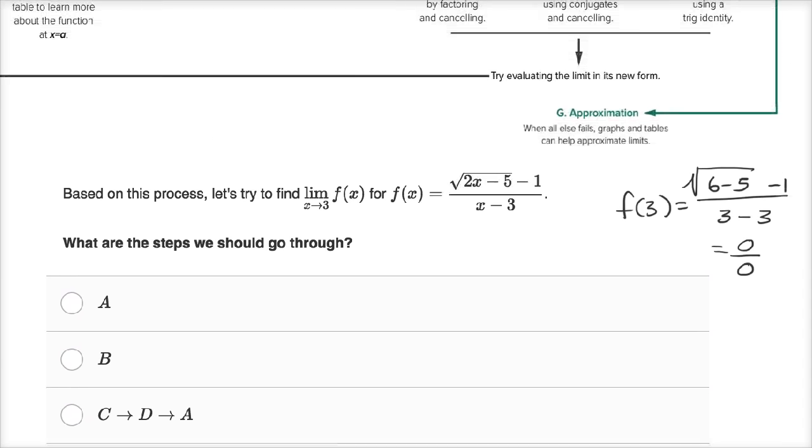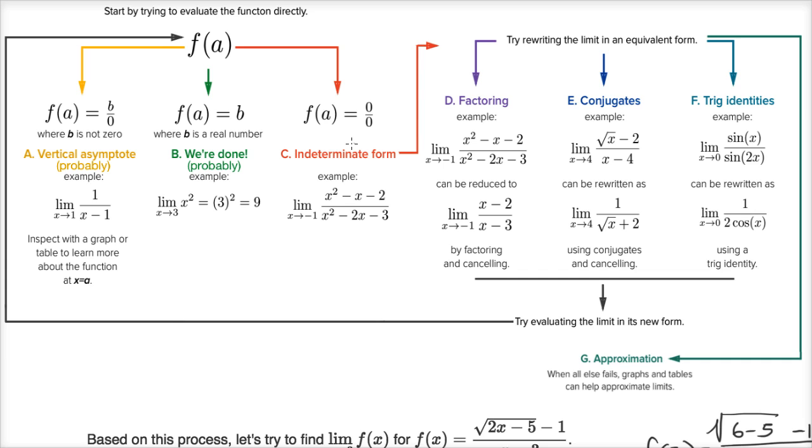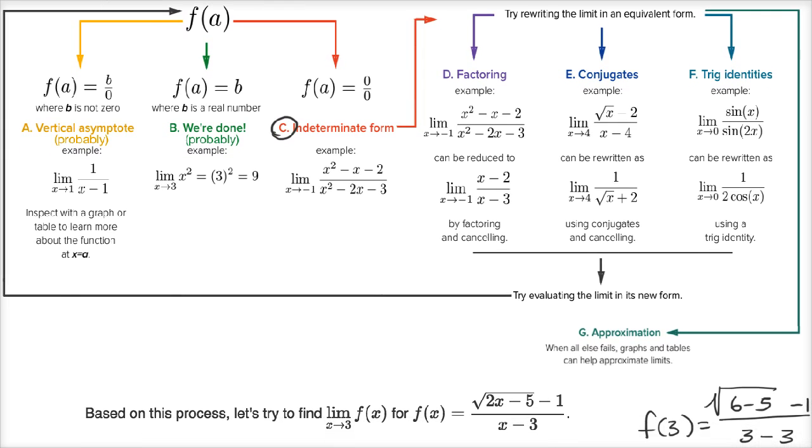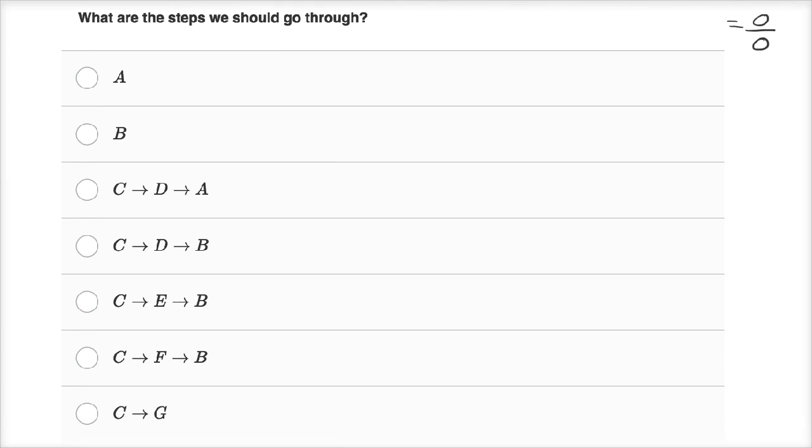So the first thing that happens is we tried to evaluate it, we fell into indeterminate form, so the first step is going to be C. Now the next thing that I would do, because we have a radical expression here, is to see if I can take a conjugate.